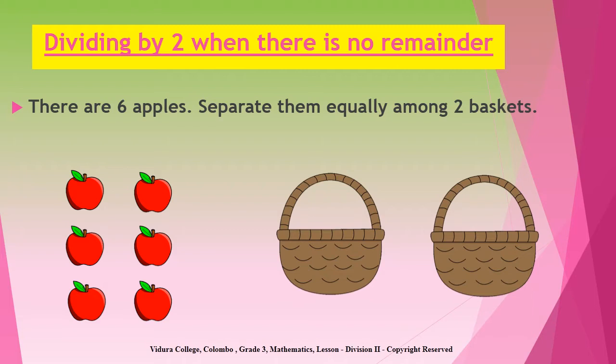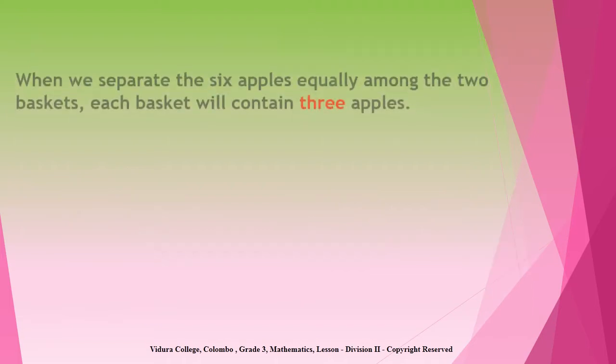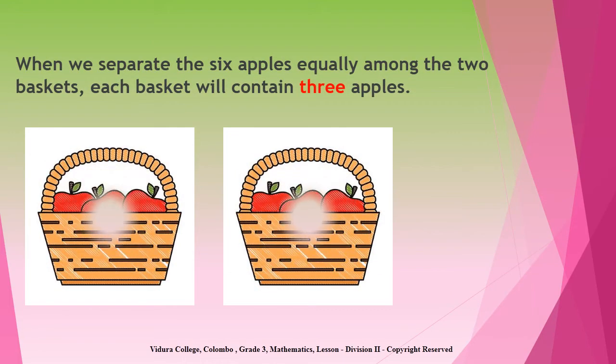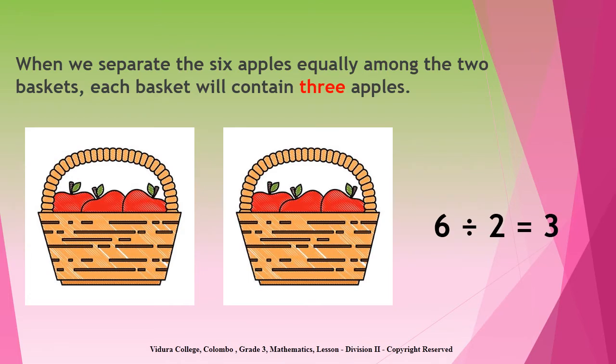Look at the example. There are six apples. Separate them equally among two baskets. So children, when you separate those six apples equally among the two baskets, each basket will contain three apples. Therefore, when you divide six by two, the answer is three.